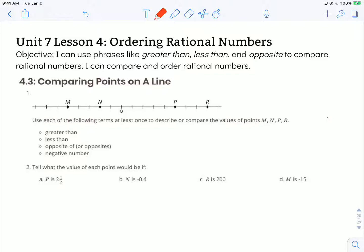Number 1 says use each of the following terms at least once to describe or compare the values of M, N, P, and R. Before we get started, I'm just going to acknowledge a few things. These are negative numbers and they are to the left or less than zero and they get smaller as we move left. On the right hand side we have positive numbers because they are greater than zero or to the right of zero, and as we move to the right we get greater as we go, a little lesser over on this side.